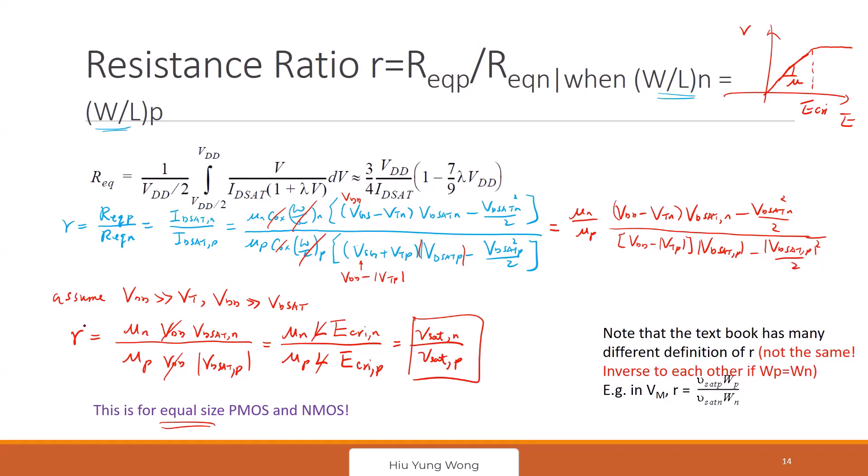Okay, I still have one minute. And actually I need to emphasize one more thing. Then what is the ratio between tPLH and tPHL? tPLH is 0.69 R equivalent of P times CL. tPHL is equivalent of N times CL. So do you see that this is equal to R, but of course assume same size.